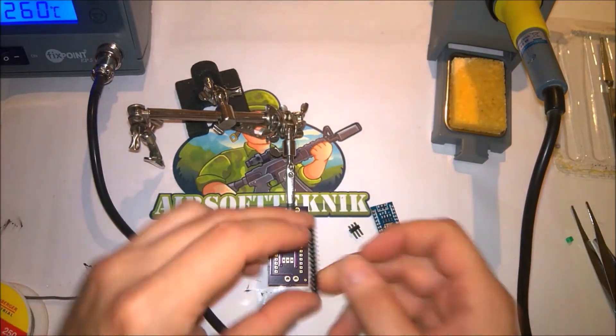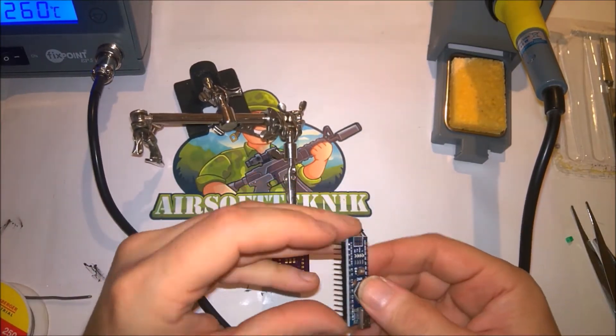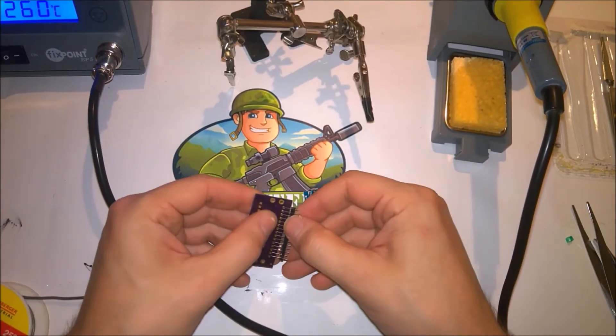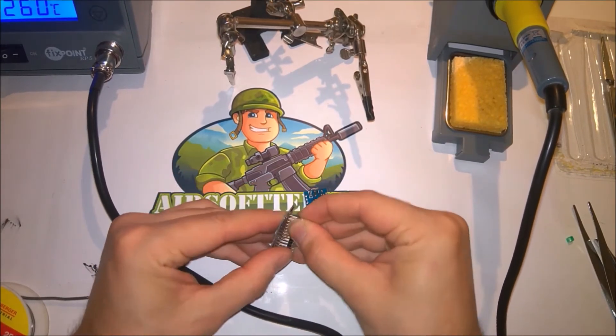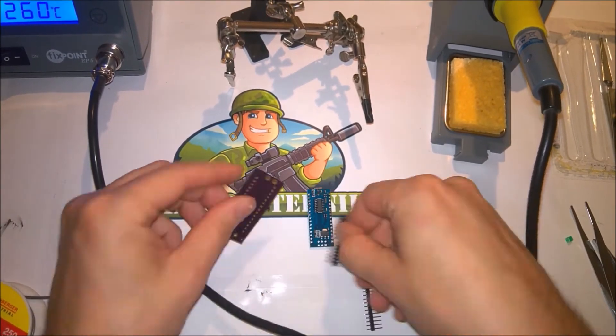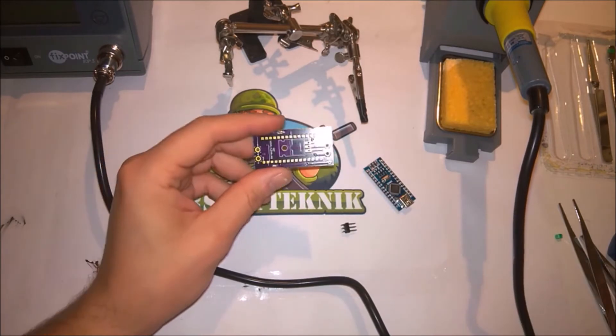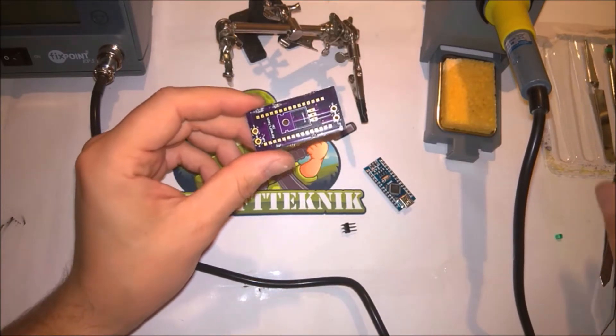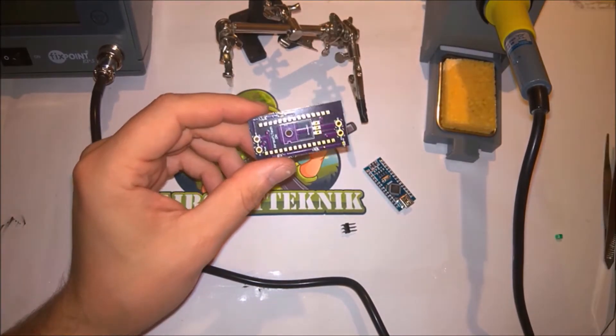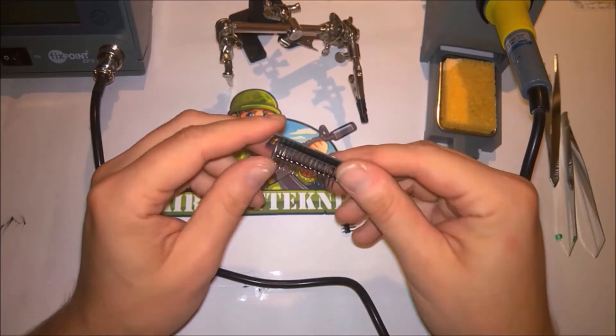Now it is time to solder on the Arduino Nano 3.0. And the one that I purchased online came with these headers which is quite convenient, because then I can just solder the headers to the Arduino and solder the whole Arduino to the board.